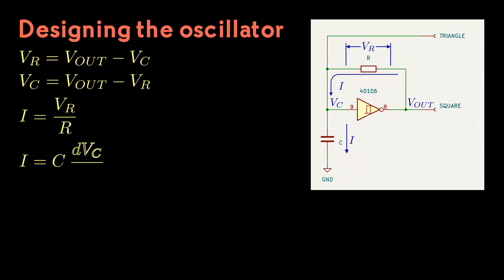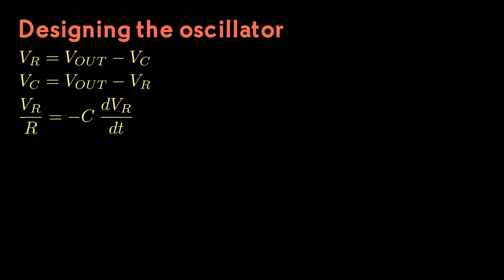The Schmitt trigger input draws negligible current, so Kirchhoff's current law says that the current into the capacitor equals the current through the resistor. We know the formula for the current into or out of a capacitor. Put everything in terms of V sub R, and set the two currents equal. Transform this differential equation to an integral, which can be solved with a little bit of elementary calculus. Now we can solve for V sub C.